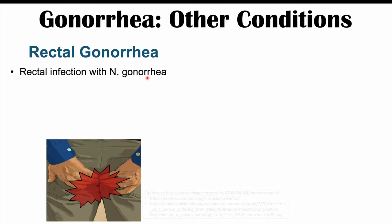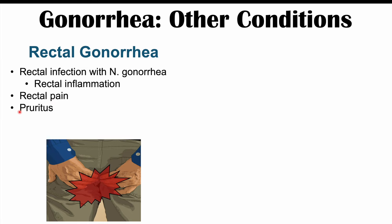Rectal gonorrhea is a rectal infection with Neisseria gonorrhea, leading to rectal inflammation. Patients experience rectal pain, pruritus (itching), tenesmus — feeling of incomplete evacuation after a bowel movement, or feeling the urge to have a bowel movement when they don't need to — as well as bleeding and discharge from damage to the rectal tissues.